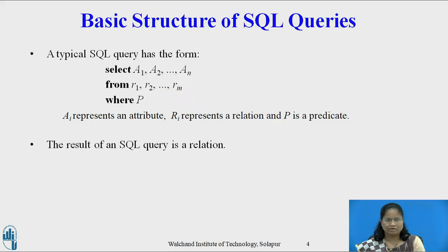The basic structure of an SQL expression consists of three clauses: SELECT, FROM, and WHERE. A typical SQL query has the form: SELECT A1, A2, ... AN FROM R1, R2, ... Rm WHERE P. Here, each Ai represents an attribute, each Ri is a relation, and P is a predicate.